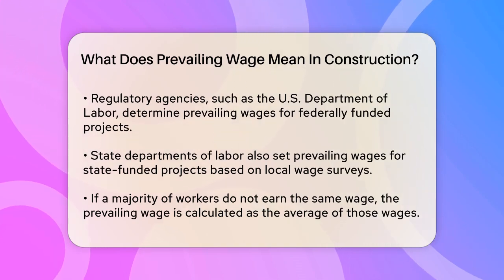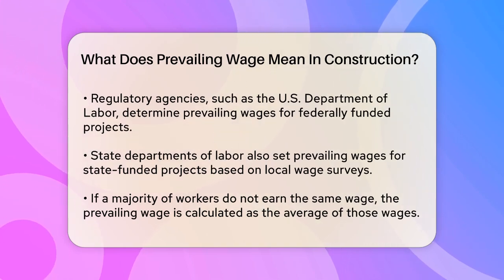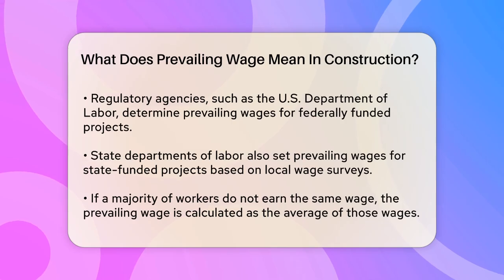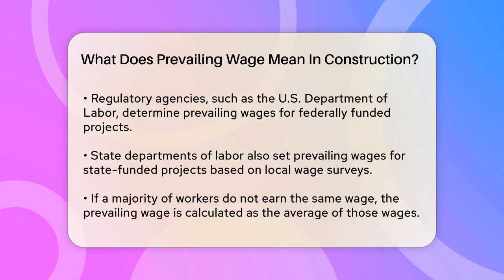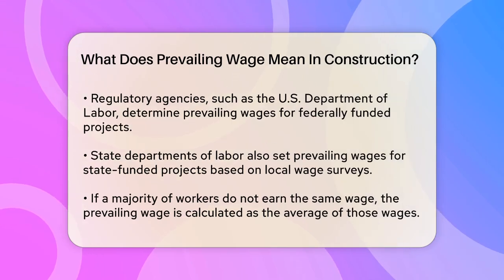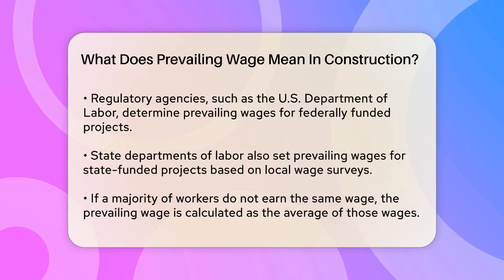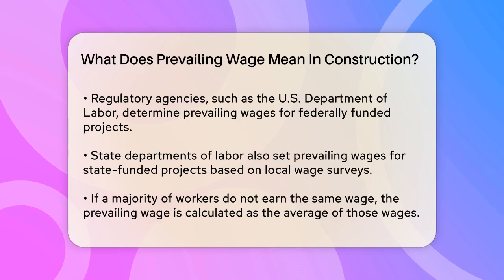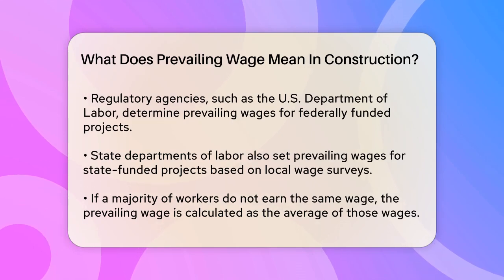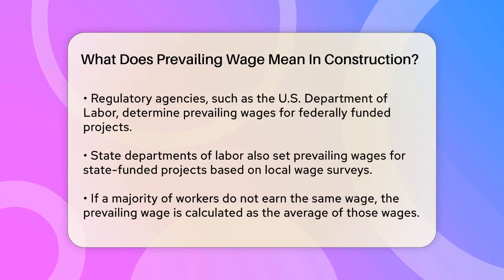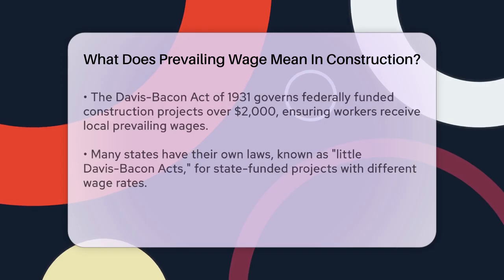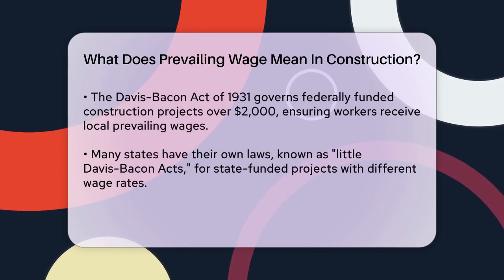There are different types of prevailing wage determinations. At the federal level, the Davis-Bacon Act of 1931 sets the rules for federally funded construction projects exceeding $2,000. This act ensures that workers on these projects are paid no less than the locally prevailing wages and benefits.